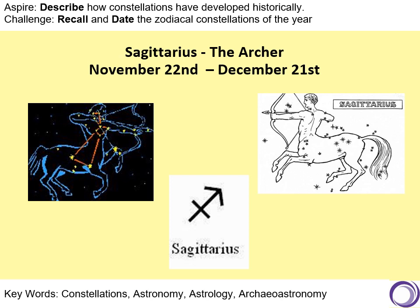Constellation number eleven is Sagittarius, also known as the archer, from November 22nd to December 21st. The symbol is a compass-type arrow in a diagonal north-east direction with an arrow. Sagittarius was a centaur — half man and half horse, as you can see from the images.